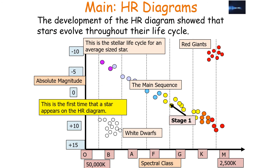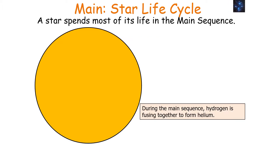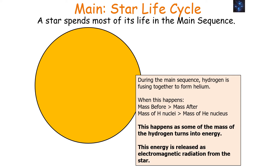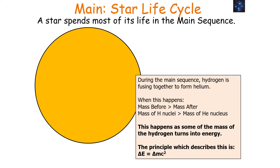We can now see where the star appears on the HR diagram — we can see the main sequence of our star. A star spends most of its life on the main sequence. During the main sequence, hydrogen is fused together to form helium. During this process, the mass before is greater than the mass afterwards, telling us that the mass of the hydrogen nuclei is greater than the mass of the helium nucleus. Some of the mass of the hydrogen turns into energy, released as electromagnetic radiation from the star.